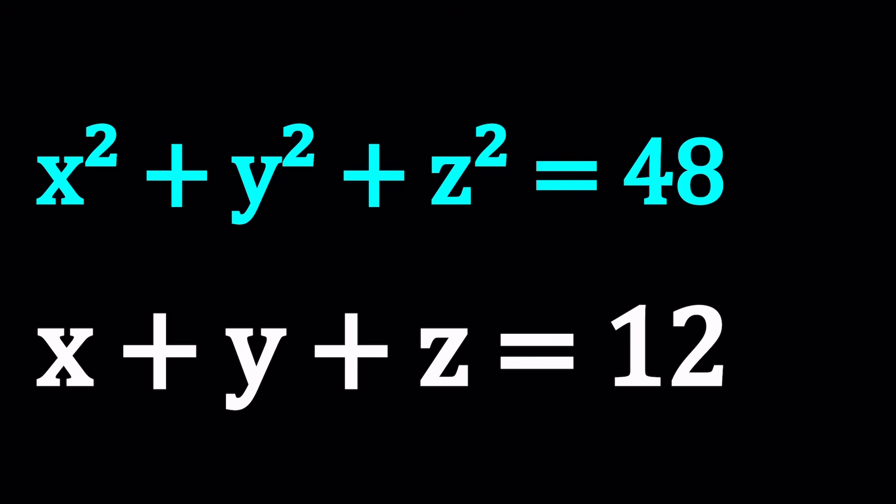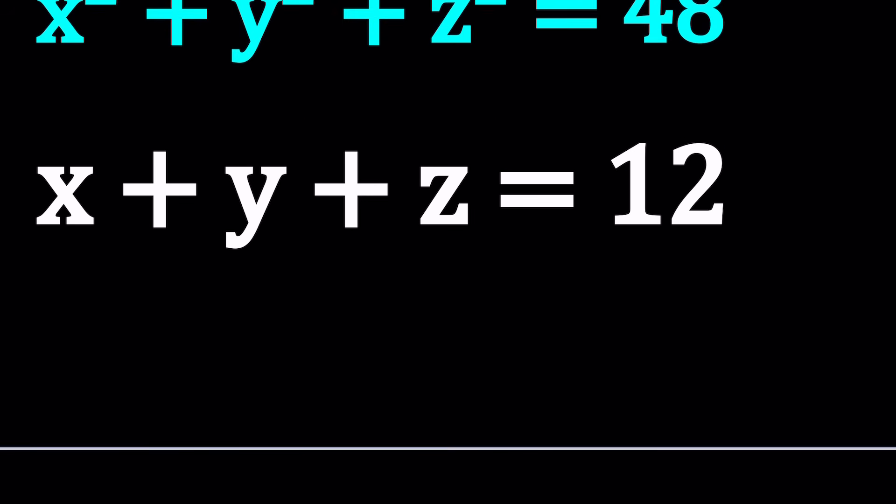So to be able to solve this system, we can talk about a couple different methods. First method, maybe we can just go ahead and start with the second one, because it's linear, and try to isolate something from there. For example, I can try to isolate z. So write z as 12 minus x minus y.